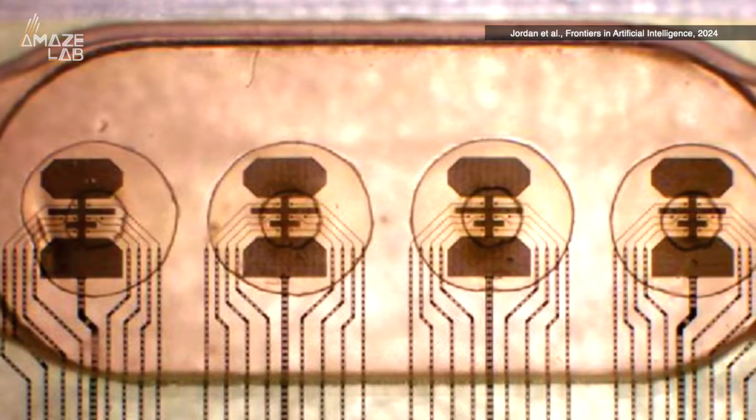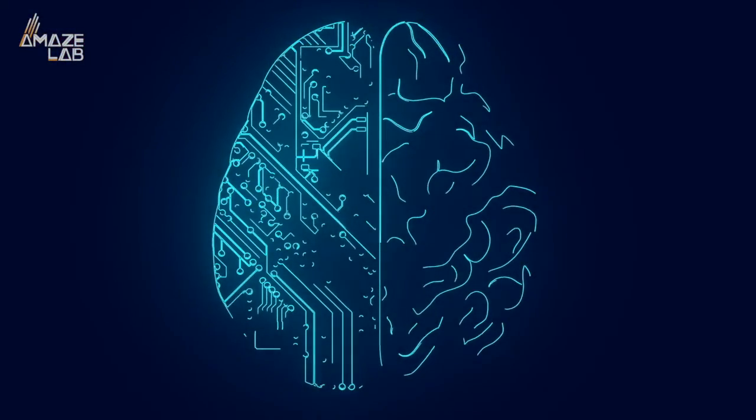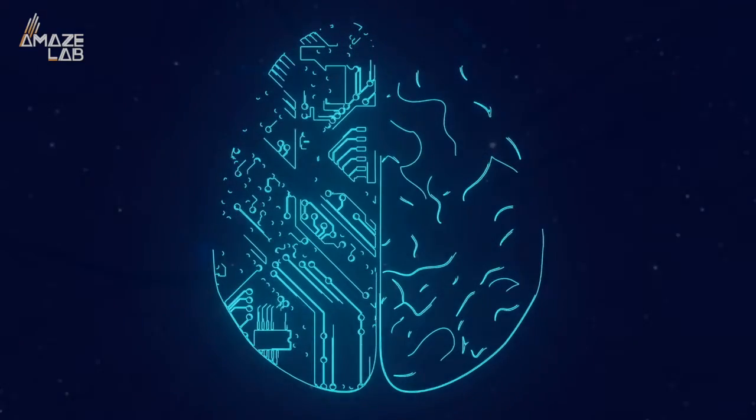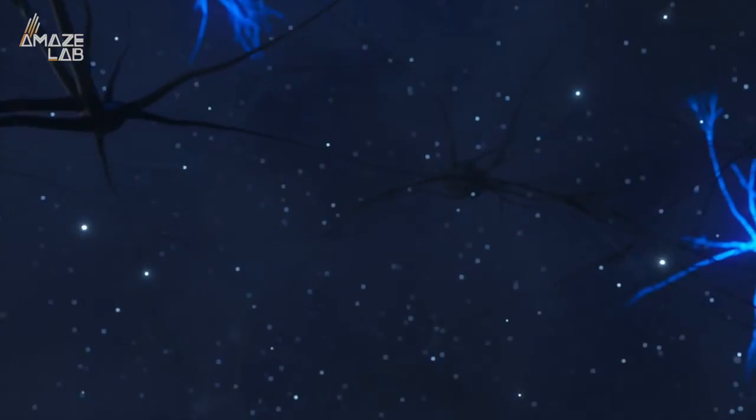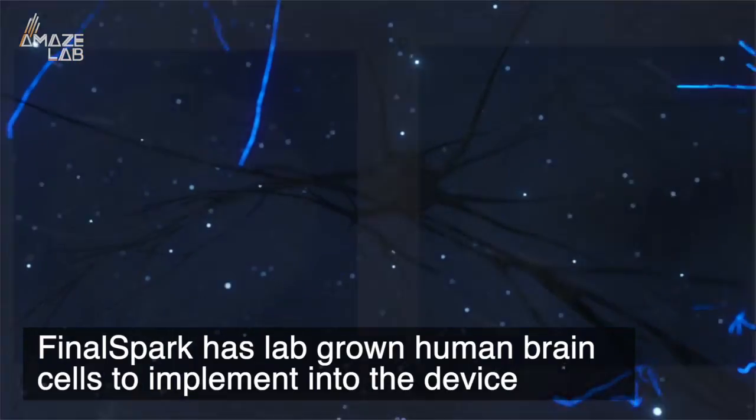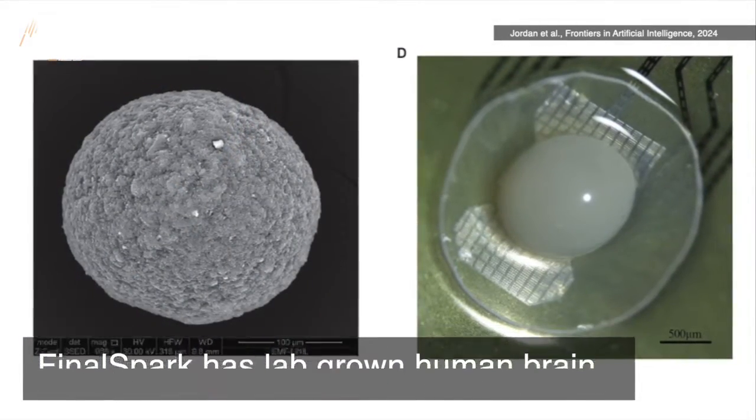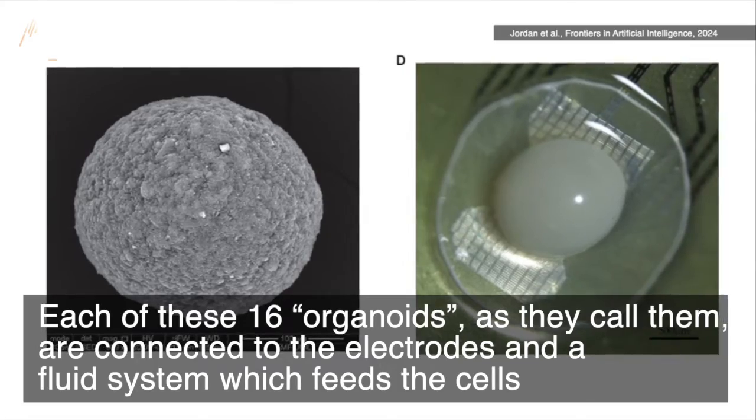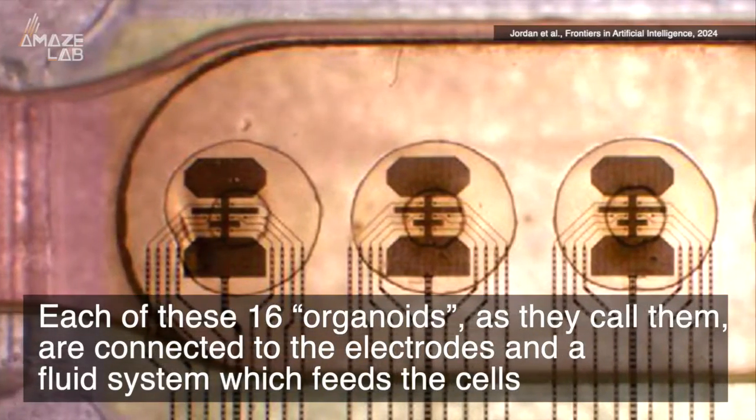One that mimics the neural network of the brain and could be the future of computing. The bio computer doesn't simply use brains as a template, rather Final Spark has lab-grown human brain cells to implement into the device. Each of these sixteen organoids, as they call them, are connected to the electrodes in a fluid system which feeds the cells.